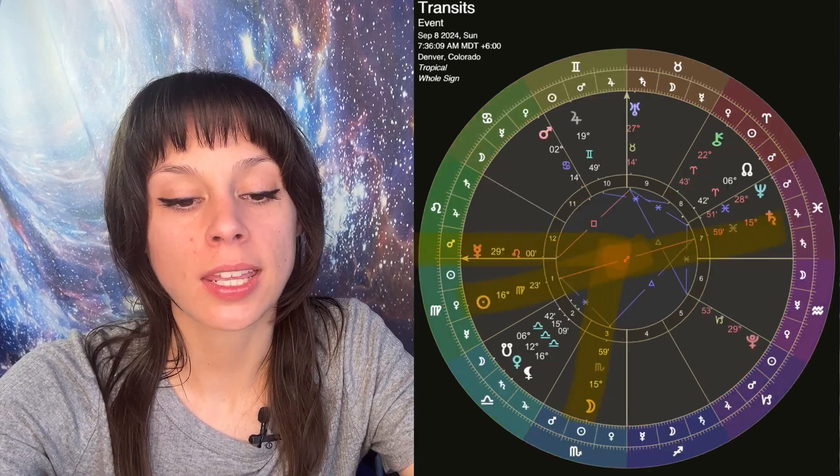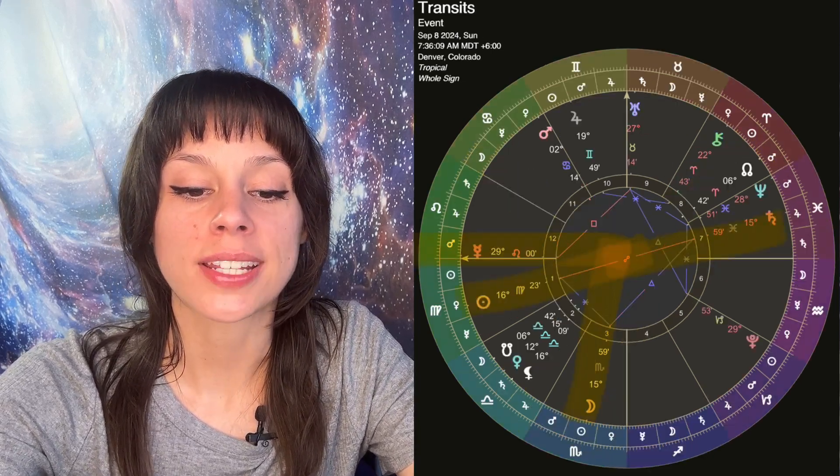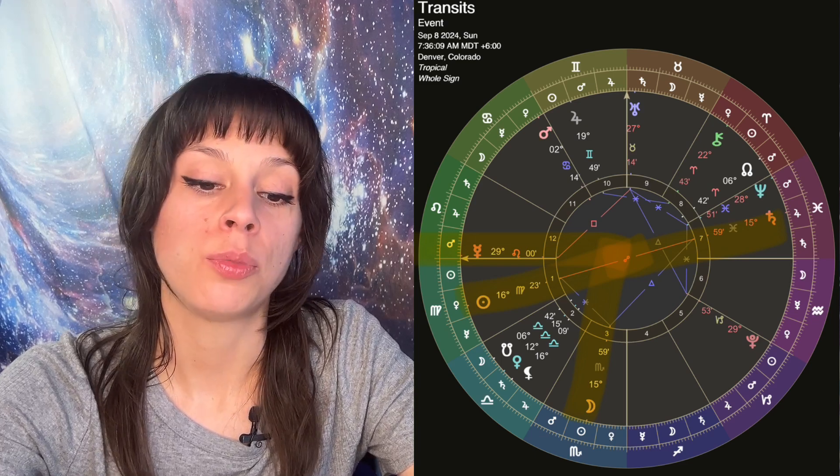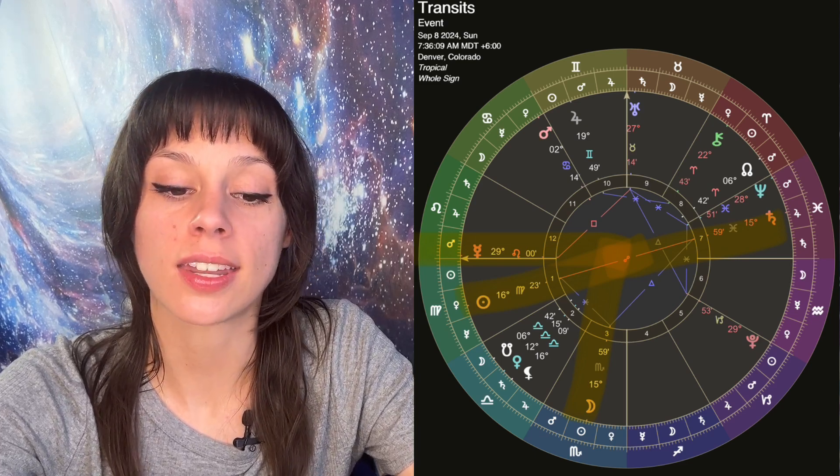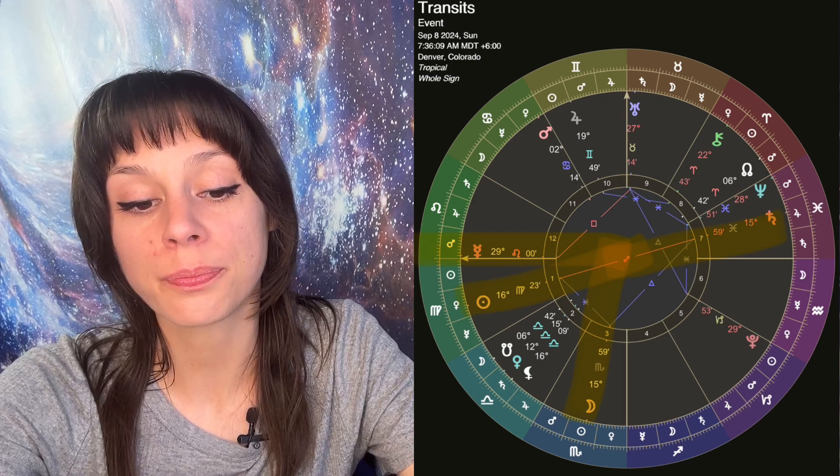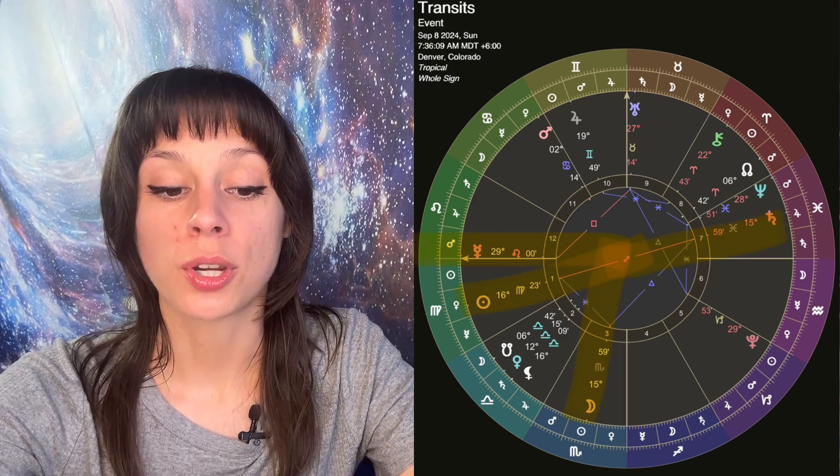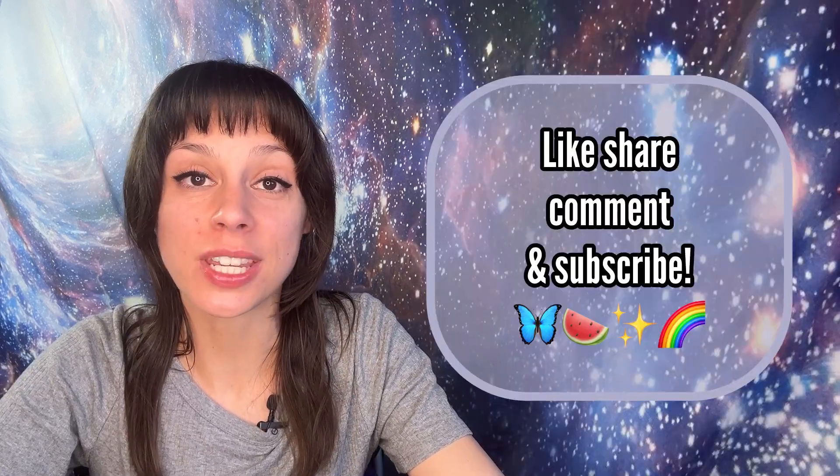On Sunday, September 8th, Scorpio moon will trine Saturn at 15 degrees of Pisces. And the Scorpio moon will make a sextile to the sun at 16 of Virgo. Sunday night into Monday morning, Mercury is going to re-enter Virgo. That is the entire week.